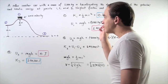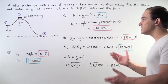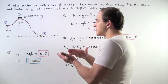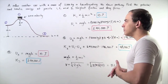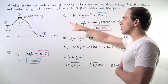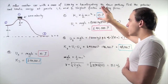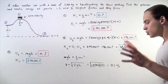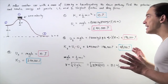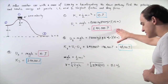Now, what about gravitational potential energy? Gravitational potential energy depends on the position of the object, the gravitational constant g, and the mass of the object, given by the formula GPE = mgh. So the gravitational potential energy at point 1 is m times g times h, which gives us 294,000 joules. All the energy at point 1 is stored as gravitational potential energy.